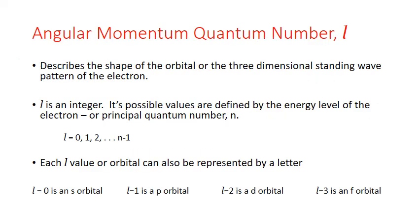The shape of the different possible orbitals found at each energy level is defined by the angular quantum number L. L is also a whole number integer, but its possible values are defined by the principal energy level. Values of L start at zero and at any principal energy level can extend to n minus 1, where n is the principal quantum number. For example, electrons at n equals 2 can be found in two different orbital shapes, L equals 0 or L equals 1, since 2 minus 1 equals 1 is the limit.